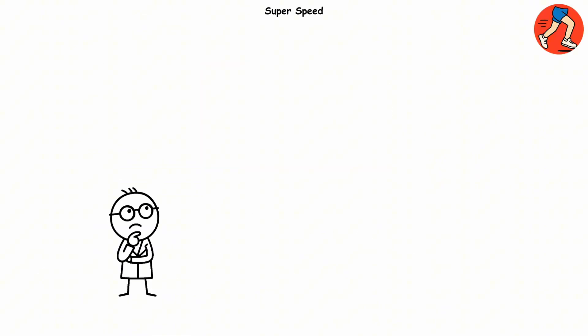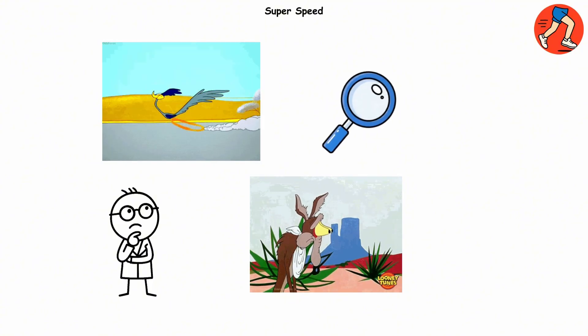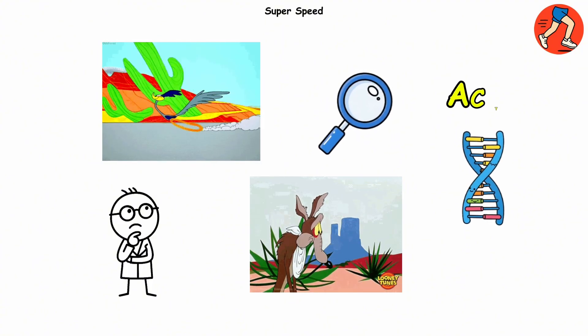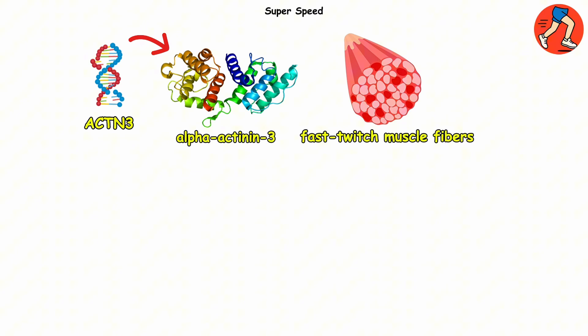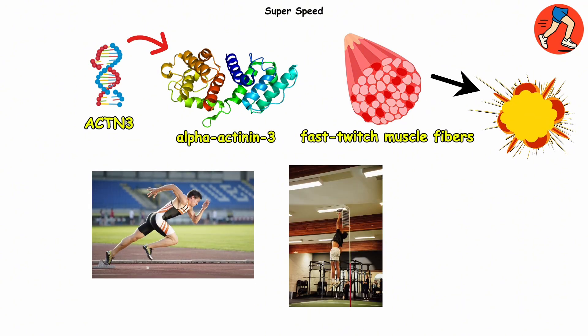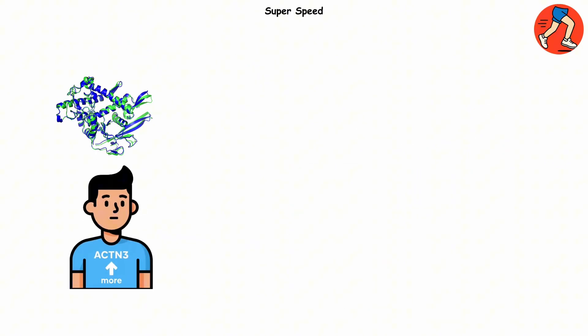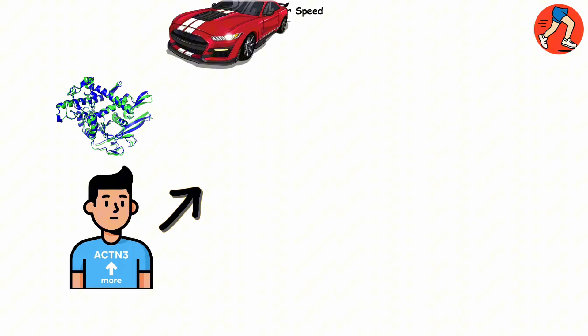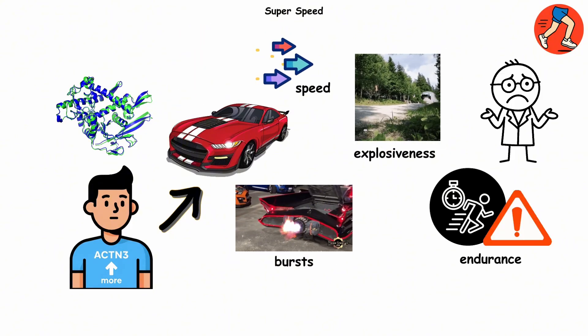Super speed. Ever wonder why some people sprint like the roadrunner while the rest of us are so far behind, like Wile E. Coyote? The secret might be hiding in a single gene. ACTN3. This gene makes a protein called alpha-actinin-3, found mostly in fast-twitch muscle fibers. The kind of muscles built for explosive movement. Think sprinting, jumping, or suddenly bursting through the wall like the Kool-Aid man. People who produce the most ACTN3 protein are like high-performance sports cars, built for speed, quick bursts, and explosiveness, but not meant for endurance.